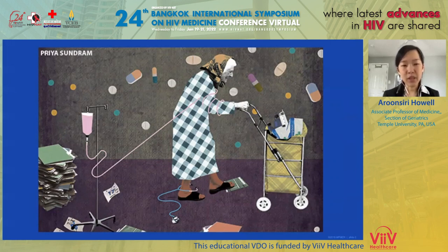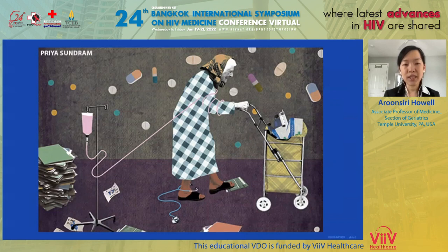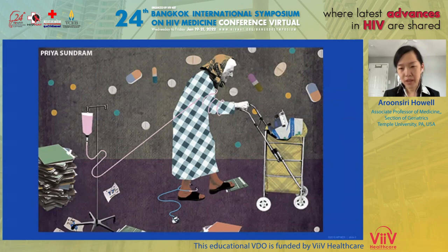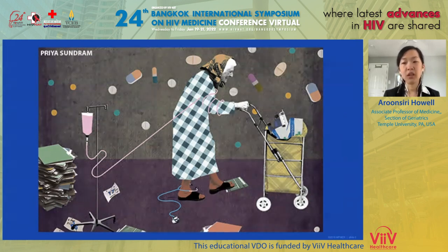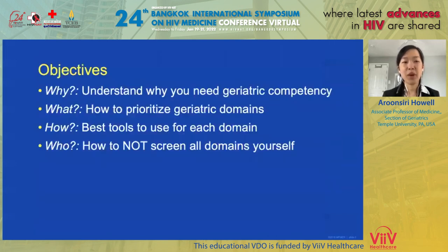If this has never happened to you, it will sooner rather than later as people with HIV continue to grow older. And if a similar scenario has happened to you, I'm here to walk you through how to effectively screen and sort through this tangle of geriatric syndromes — possibly in less than 15 minutes — so that you can restore her function and cognition, providing a healthy foundation that will allow your other treatments and interventions to succeed. Here's the roadmap for today.